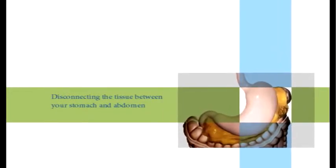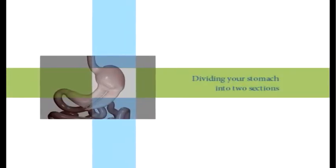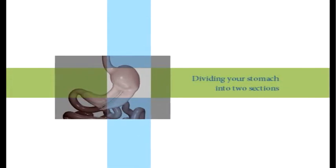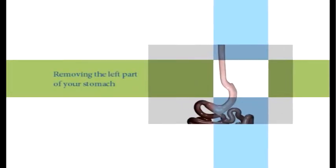There are three main steps in the sleeve gastrectomy. The first step is disconnecting the tissue between your stomach and your abdomen. The second step is dividing your stomach into two sections. The third step is removing the upper rounded left part of your stomach.